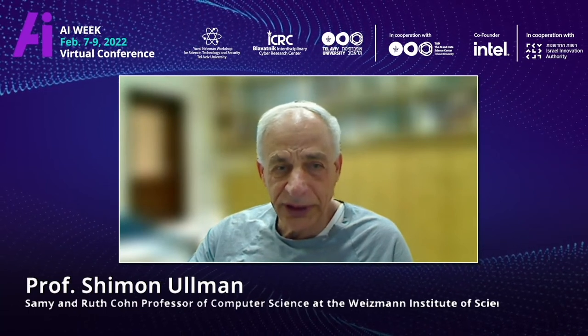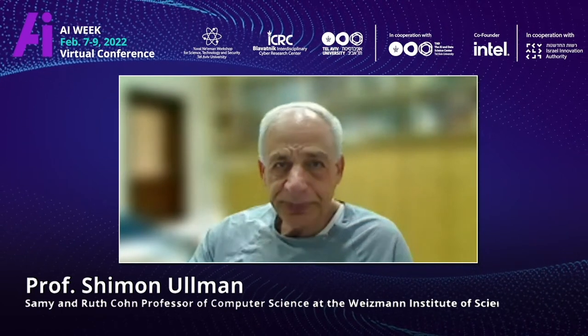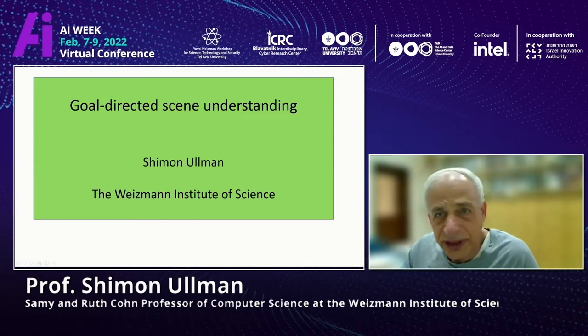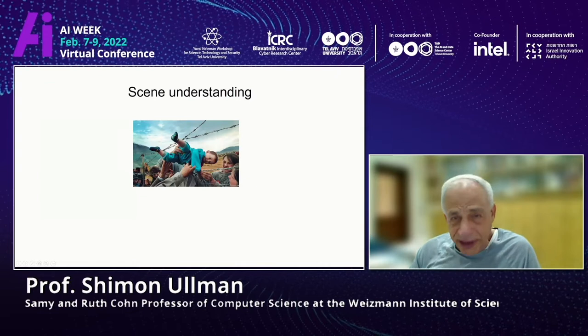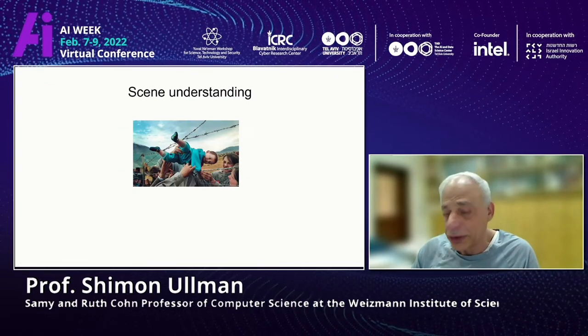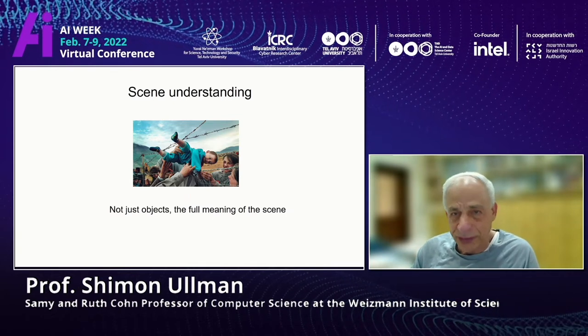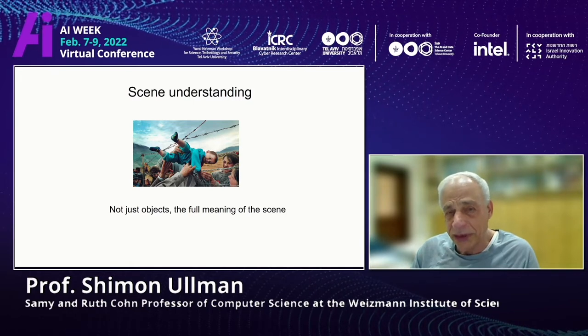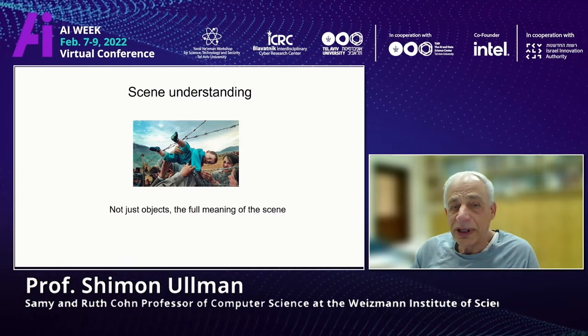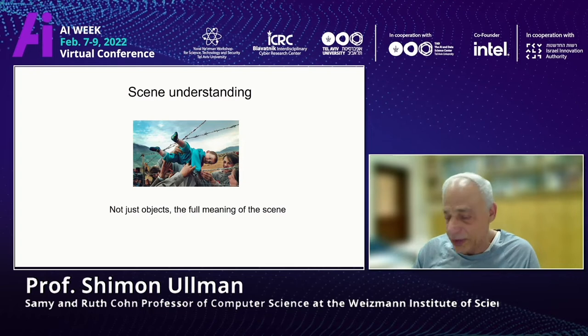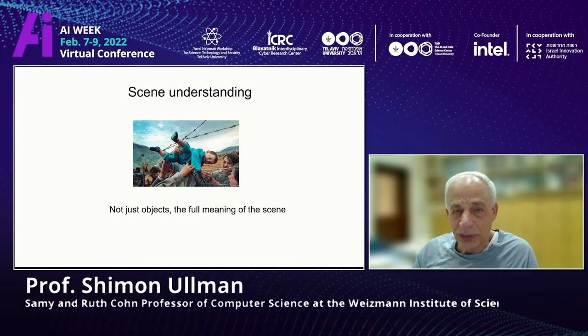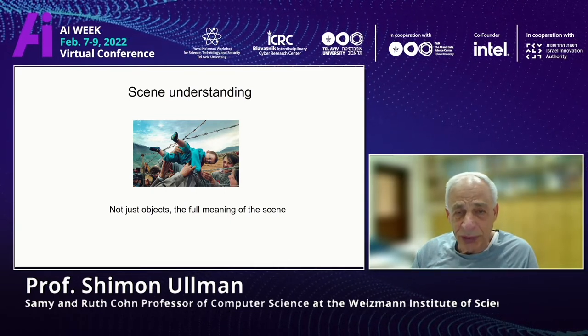Thank you very much. The title of the presentation is Goal Directed Scene Understanding. Scene understanding is what we do here — we look at an image and recognize what's going on. It's not just recognizing different objects in the scene; we get a full meaning, a full story of what's happening. This is something we do very naturally as people, but in computer vision and AI, we are still very far from understanding scenes and getting that meaning out of them.